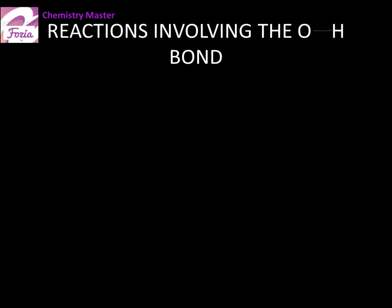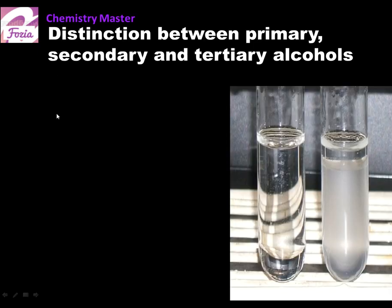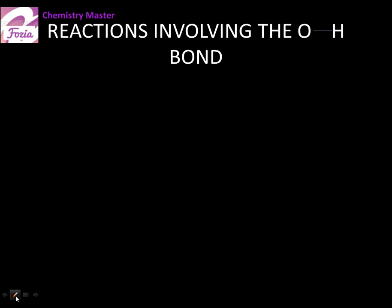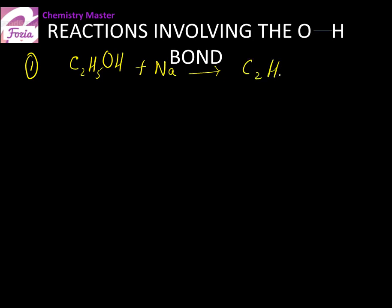Now we study reaction type 2, in which the oxygen and hydrogen bond breaks. The first reaction: C2H5OH reacts with sodium metal to give C2H5ONa (sodium ethoxide) and H2 as a by-product. To balance the equation, since one hydrogen molecule requires two hydrogen atoms and only one hydrogen comes from one molecule of ethanol, we double up the equation to get a hydrogen molecule.